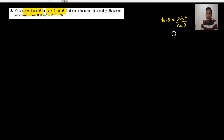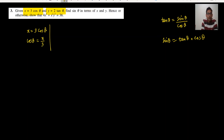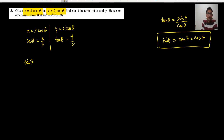If x equals 3 cos theta, then cos theta equals x upon 3. And y equals 2 tan theta, so tan theta equals y upon 2. We have already shown that sine theta equals tan theta times cos theta, so sine theta equals y upon 2 multiplied by x upon 3, giving the answer xy upon 6. This is the first part done.